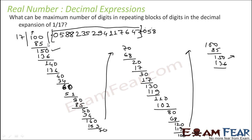So this is the maximum repeating block. The maximum number of digits in the repeating block is: counting 1, 2, 3, 4, 5, 6, 7, 8, 9, 10, 11, 12, 13, 14, 15, 16 — 16 digits are repeating in this rational number's decimal expression. To find such answers, you have to actually do the long division and find the decimal expression, then count how many digits are repeating.